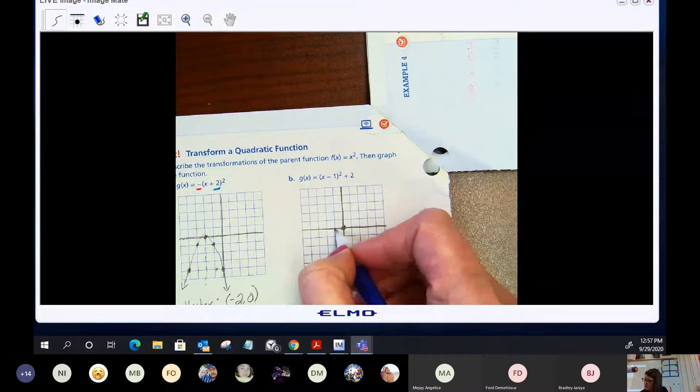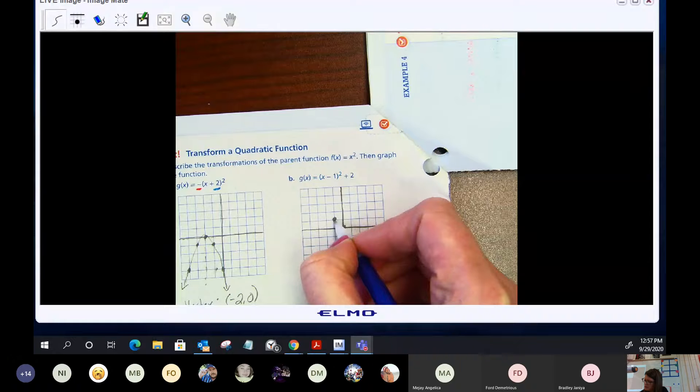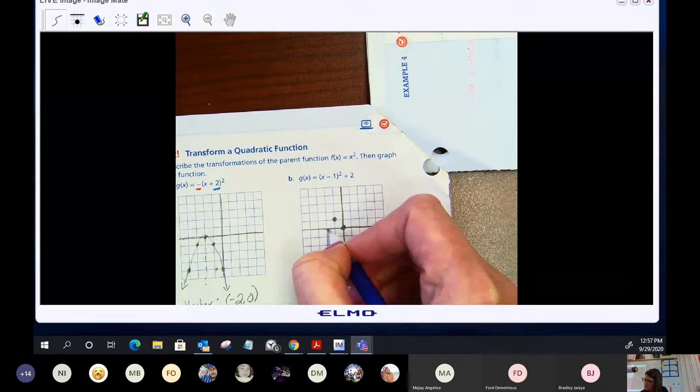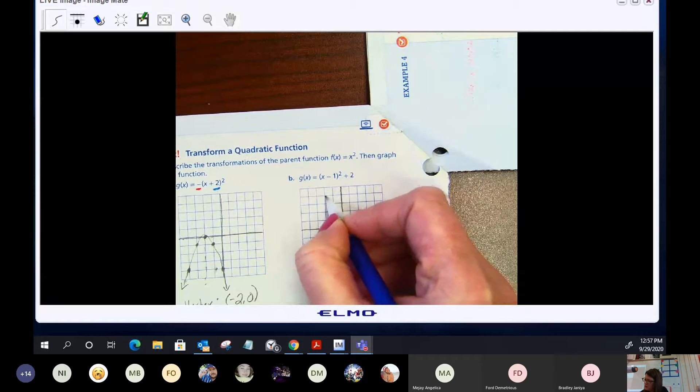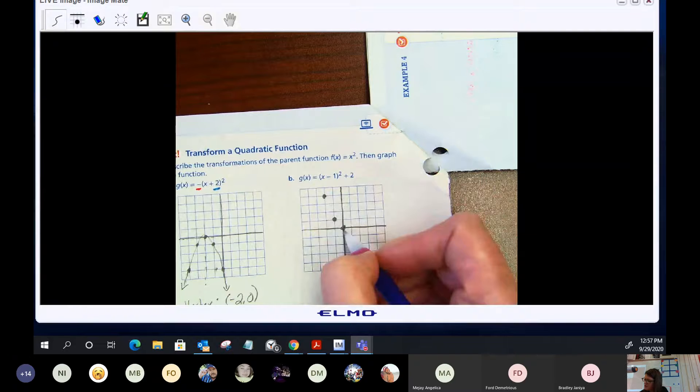Negative one, okay. So when x is negative one, negative one squared is a positive one. If I go to negative two, negative two squared is a positive four, one, two, three, four.